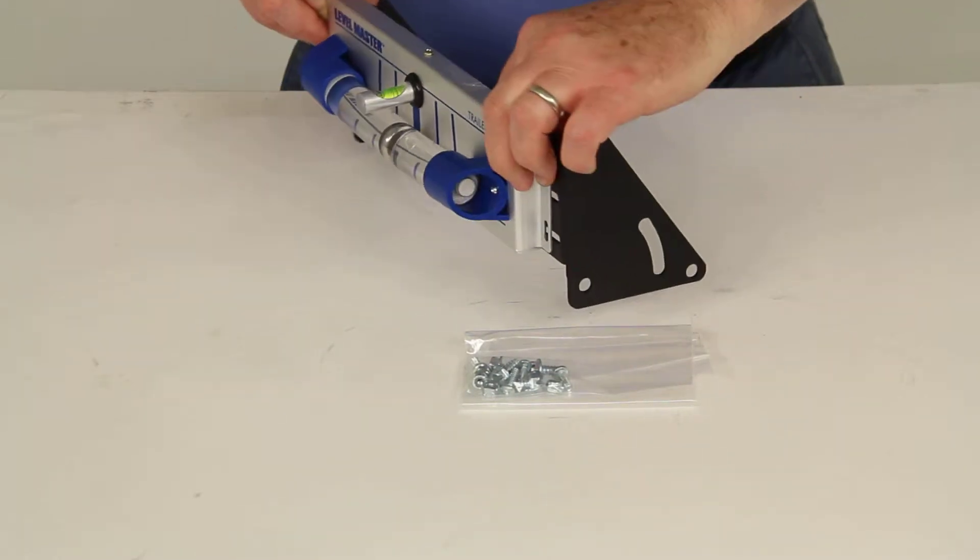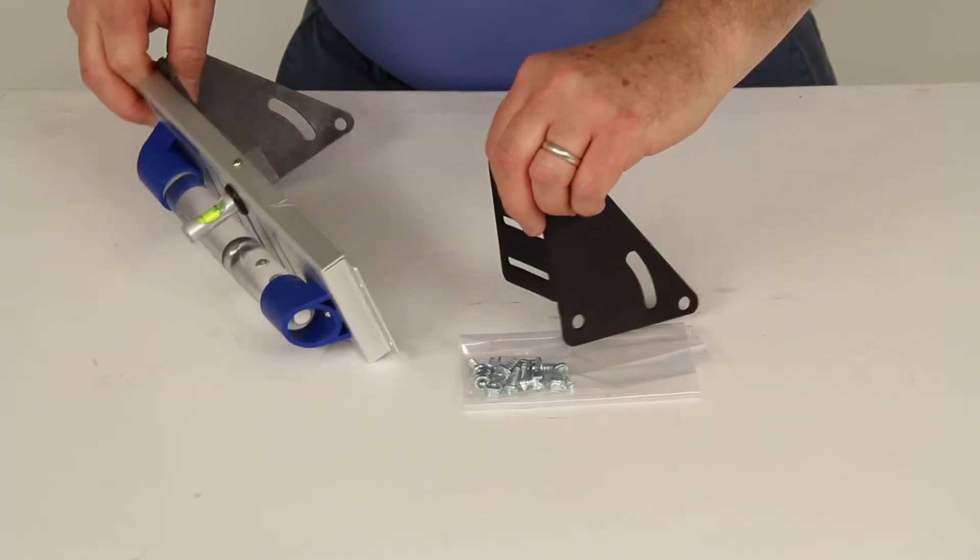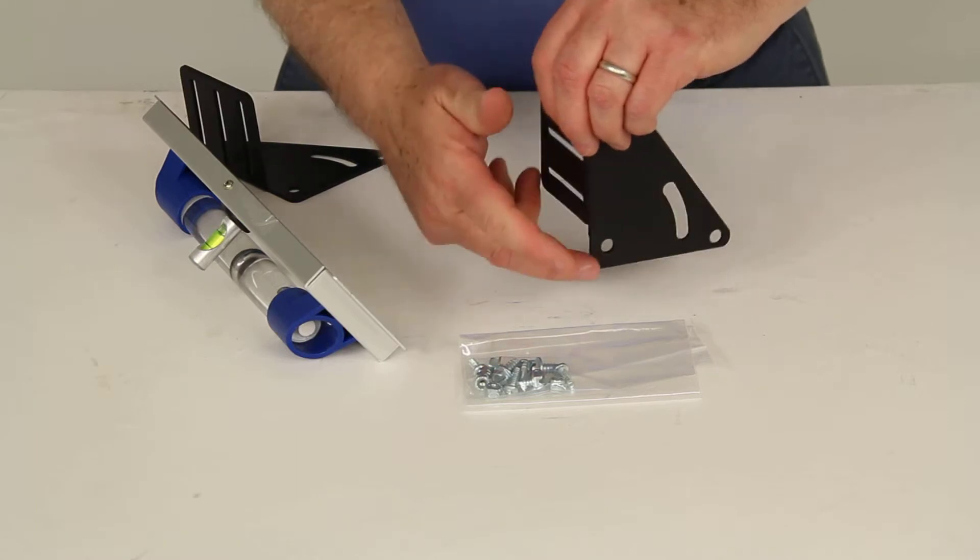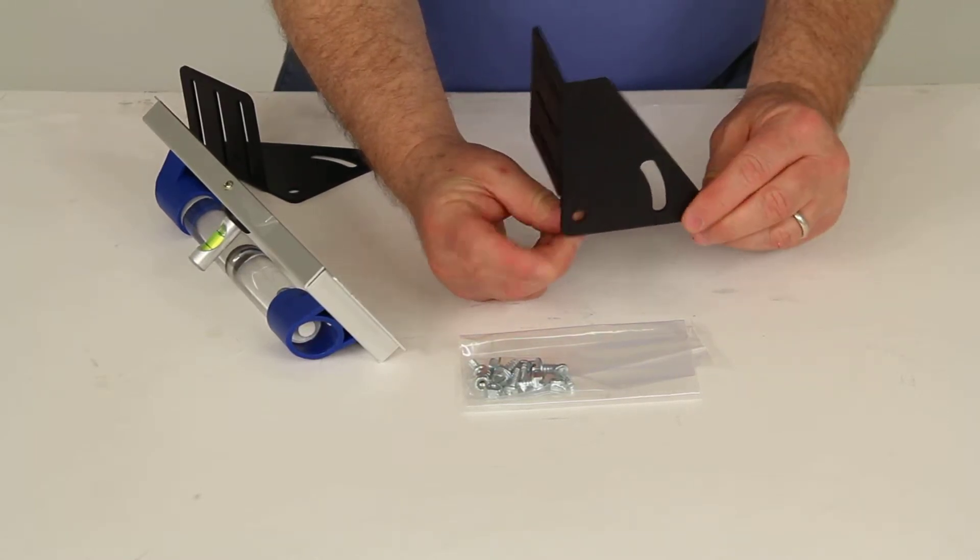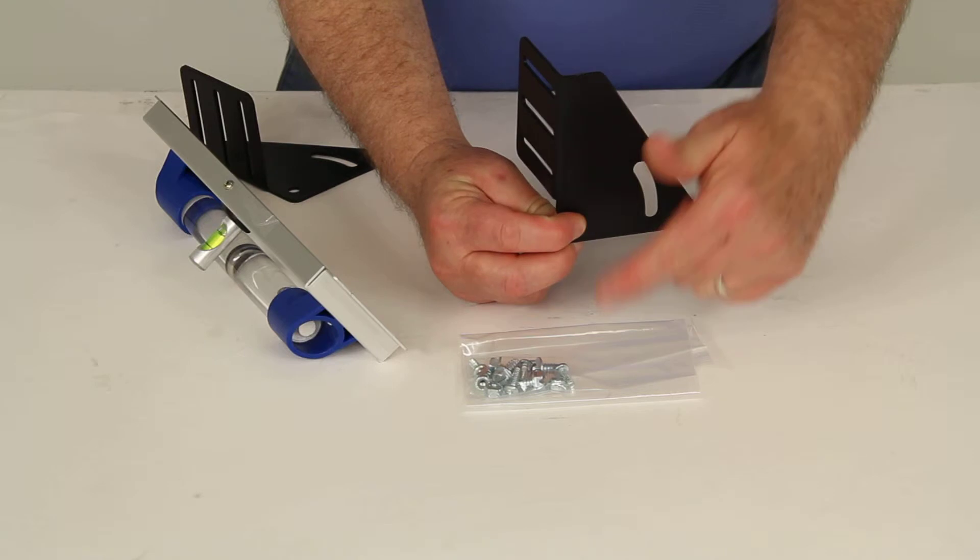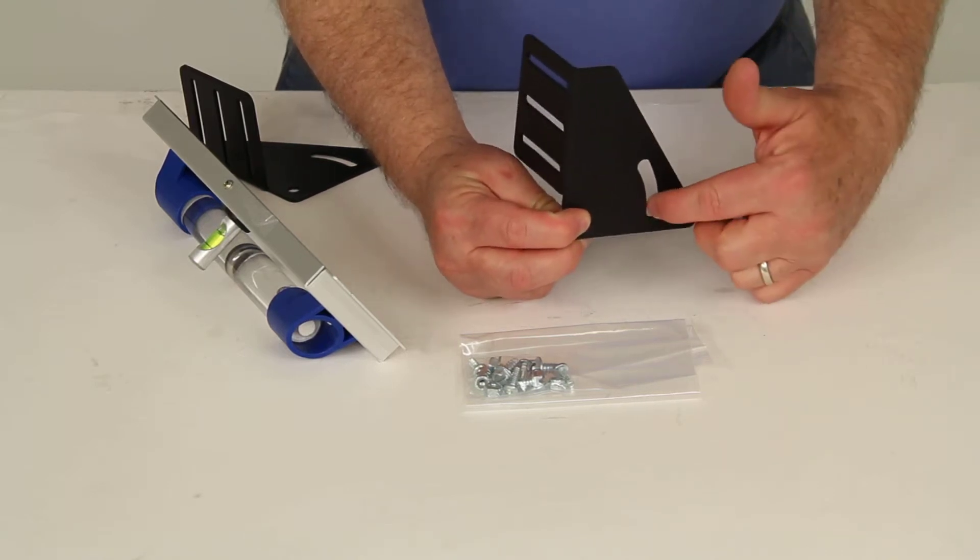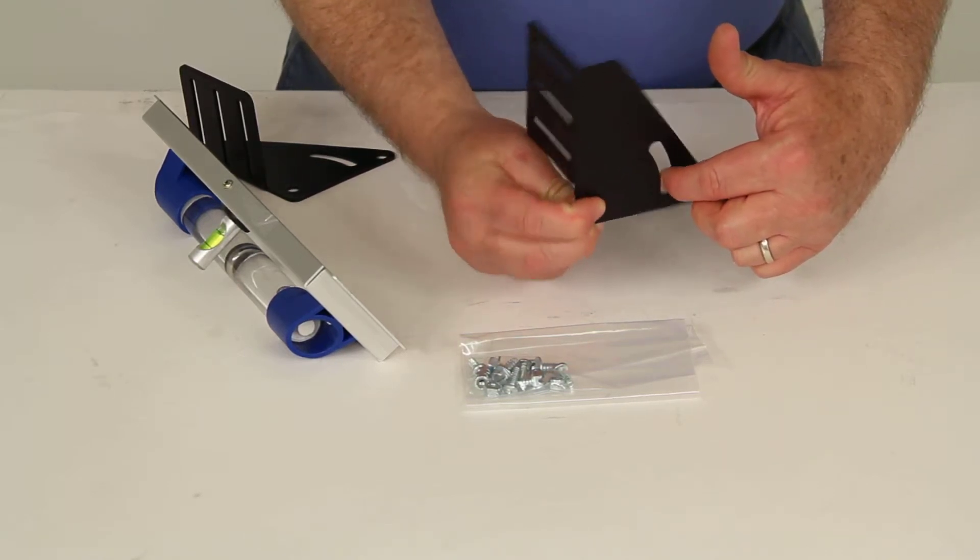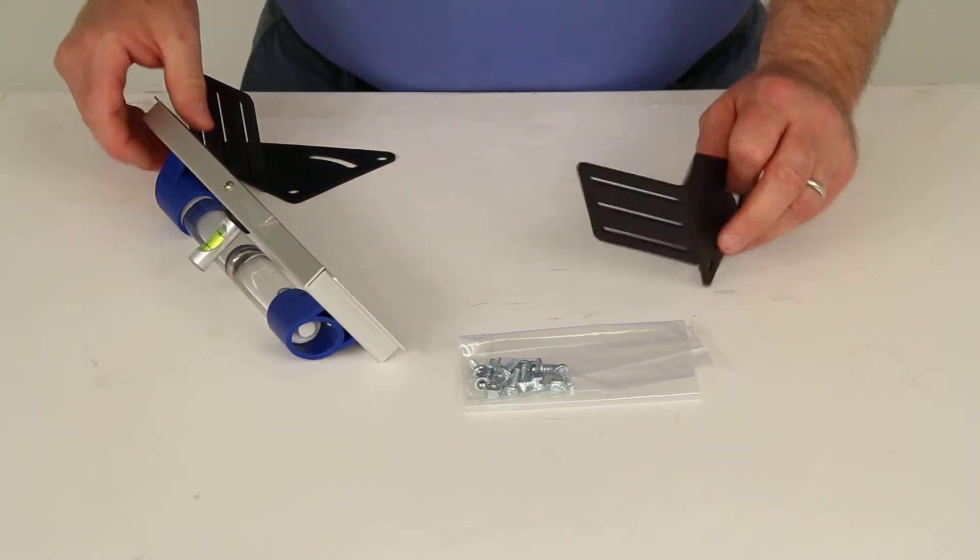And then using the mounting hardware that comes with the brackets, you can bolt the brackets to your pin box right here, or you can put one here and one of the mounting screws in here, and it will allow you to move that bracket up or down depending on the angle of your pin box.